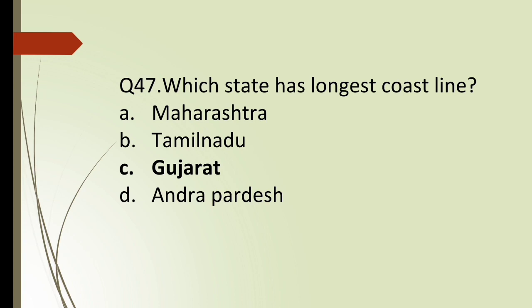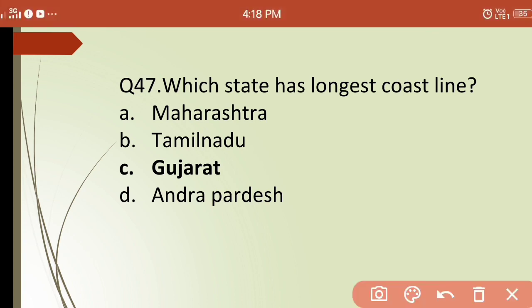Forty-seventh question: which state has the longest coastline? Options are: (a) Maharashtra, (b) Tamil Nadu, (c) Gujarat, (d) Andhra Pradesh. The correct answer is (c) Gujarat — Gujarat is the only state which has the longest coastline.